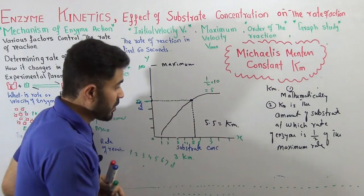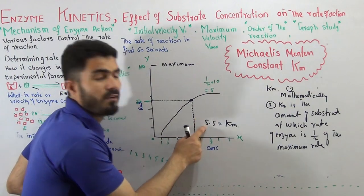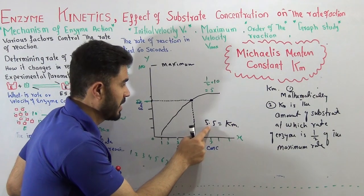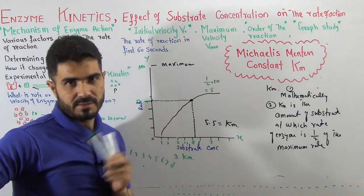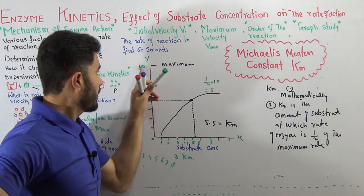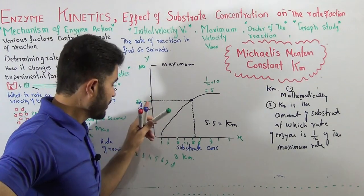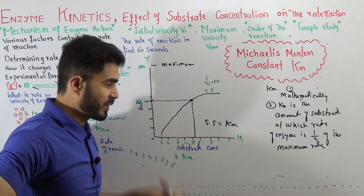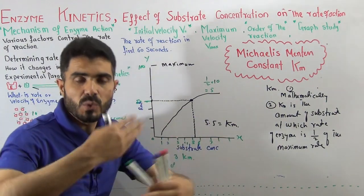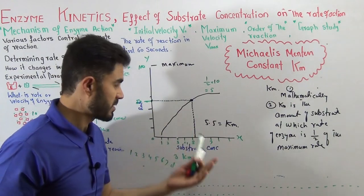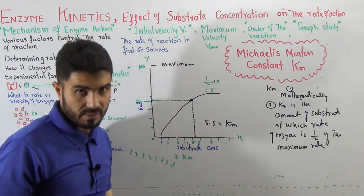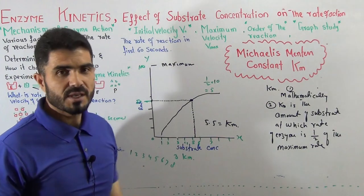Different enzymes have different Km. For the first enzyme that we discussed, the Km was around 3. But here, this is another enzyme and another reaction where the Km is 5.5. Why? Because at the concentration of 5.5, the rate of reaction is half of the maximum. In this way, you can go further to trace in different other reactions. I hope you got this Km.